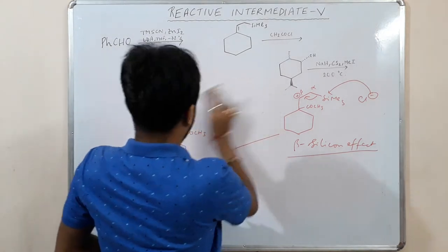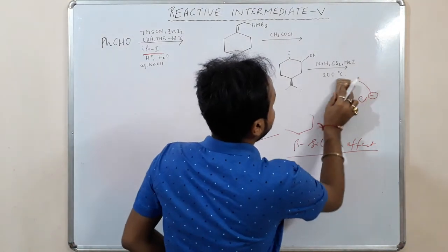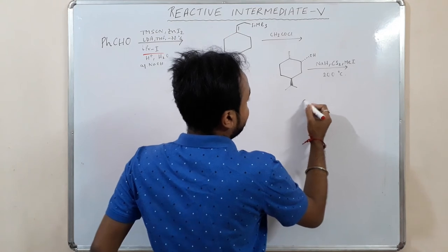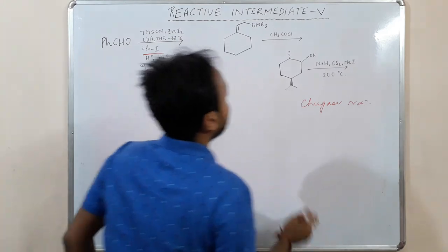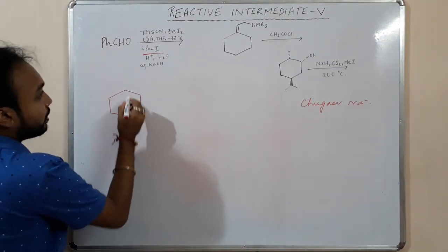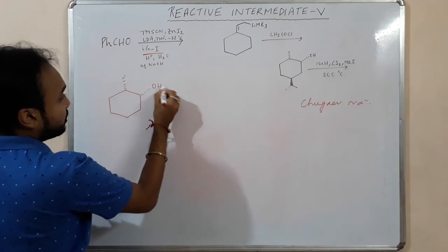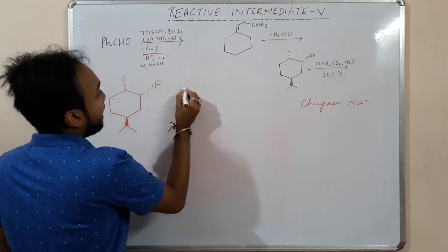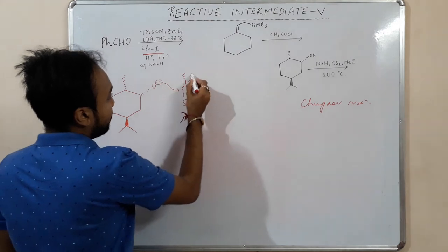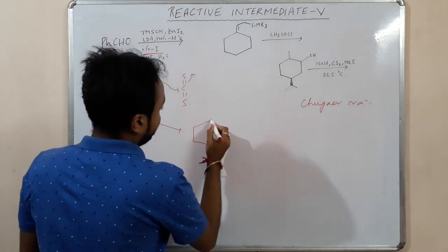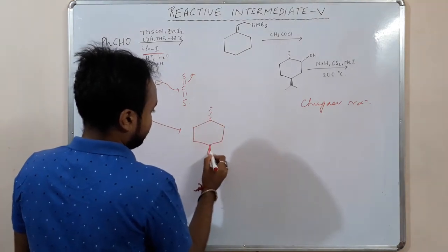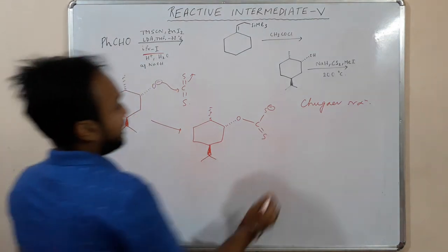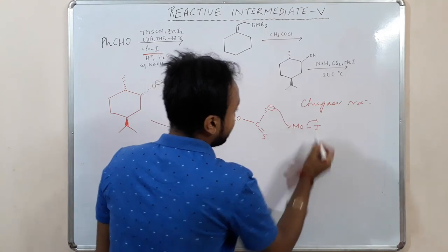The next reaction is a syn (cis) elimination — specifically a Chugaev reaction, which is a pyrolytic elimination. Starting with an OH group: sodium hydride abstracts the proton, then carbon disulfide attacks to give a dithiocarbonate anion (C–S⁻=S). Methyl iodide is then added, and the sulfur attacks methyl — giving an O–C(=S)–SMe xanthate ester.